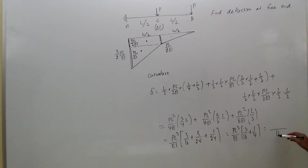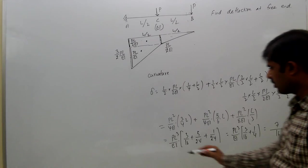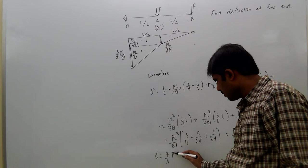That equals, LCM is 16, so 4 plus 3 equals 7, giving 7PL³/16EI. That means delta equals 7/16 of PL³/EI. So that is the deflection at the free end.